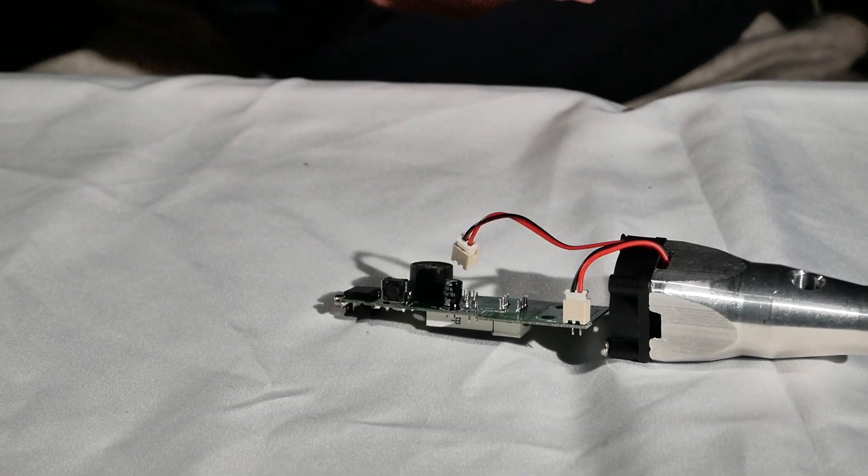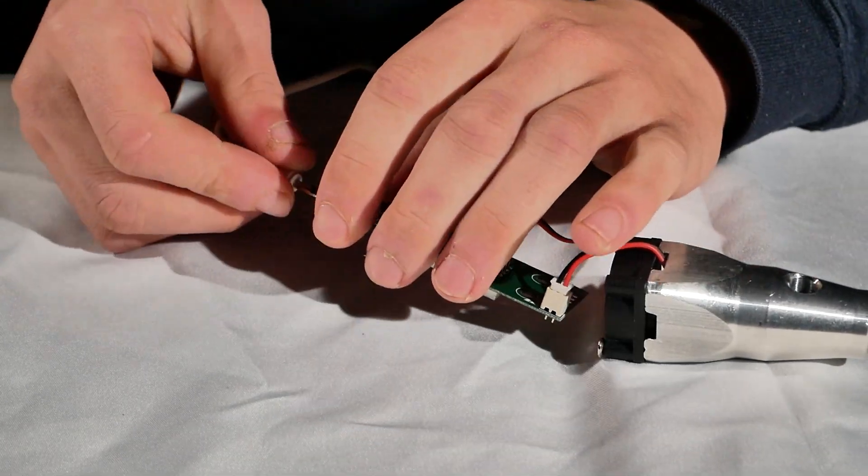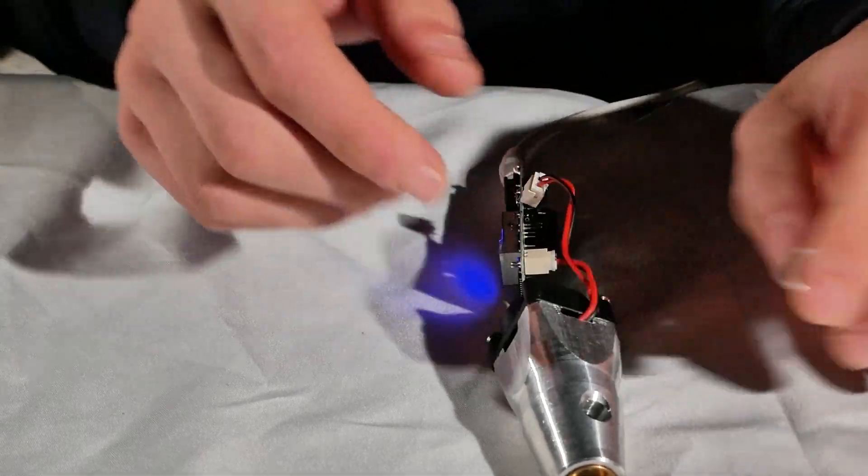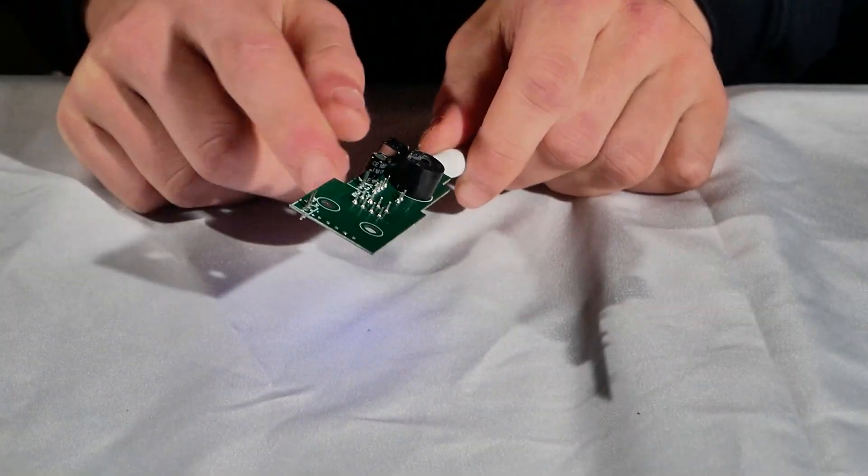I'm going to connect the circuit board back on just to see how this thing works. Let's see if that does the trick. Whoa! So this is without the little lens in front. So let's put that back on. And we're not going to need the circuit board anymore.